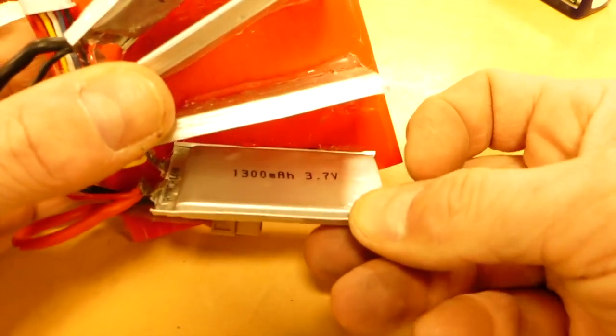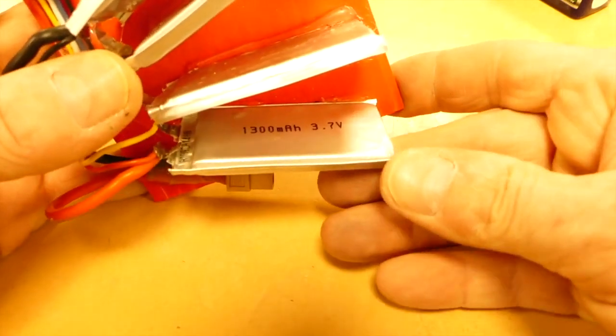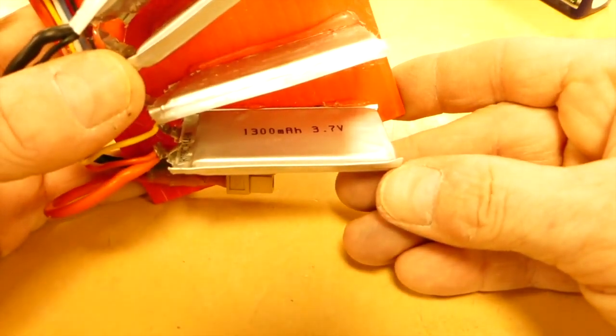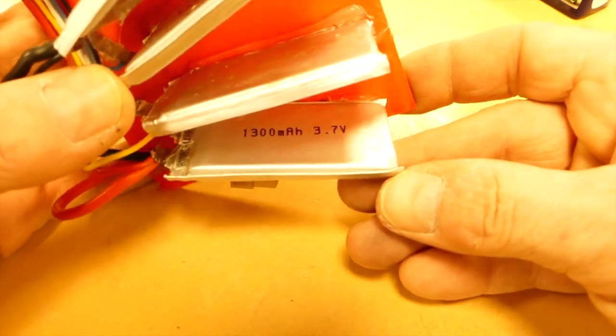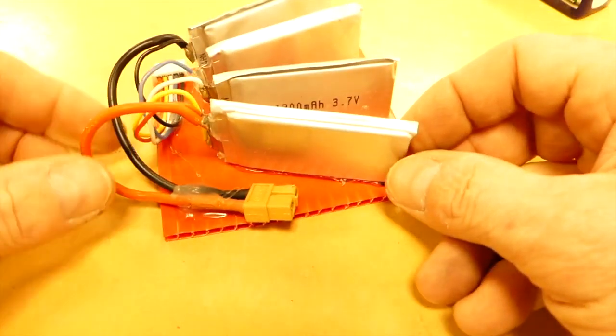Nominal cell voltage is 3.7 volts, but that changes depending on the state of charge. A full cell has a voltage of 4.2 volts and anything below 3.5 volts can be considered empty.